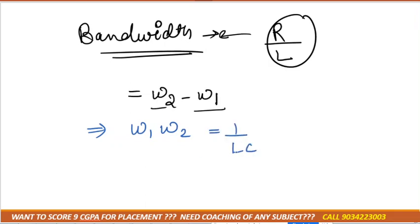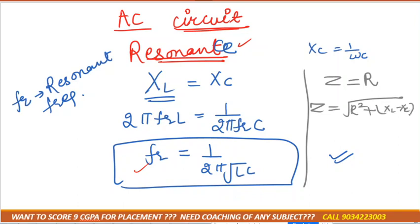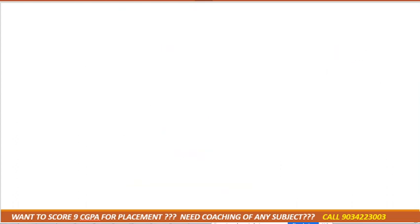Another thing where we are having relationship between Ω1 and Ω2, that is 1 by LC. And in the resonance condition, if XL is equal to XC, then that would be equal to how much? R, right. Because in general, the formula for Z is √(R² + (XL - XC)²). So if XL is equal to XC, then we'll get Z is equal to R.